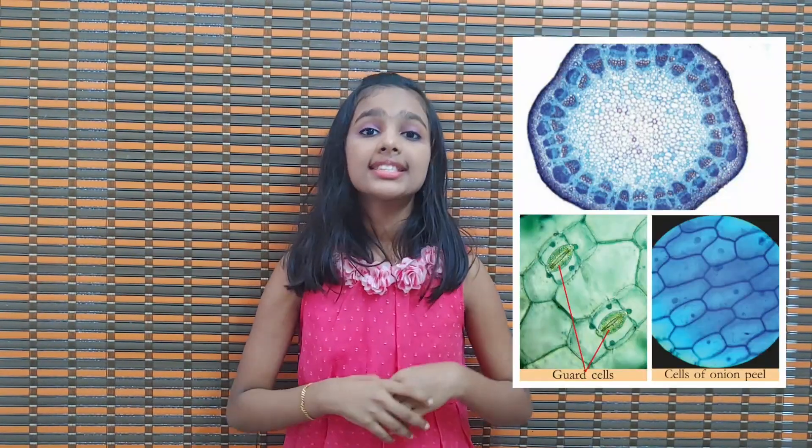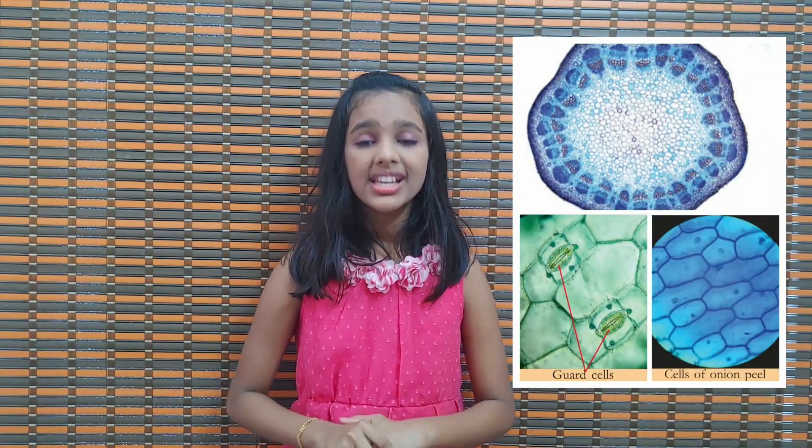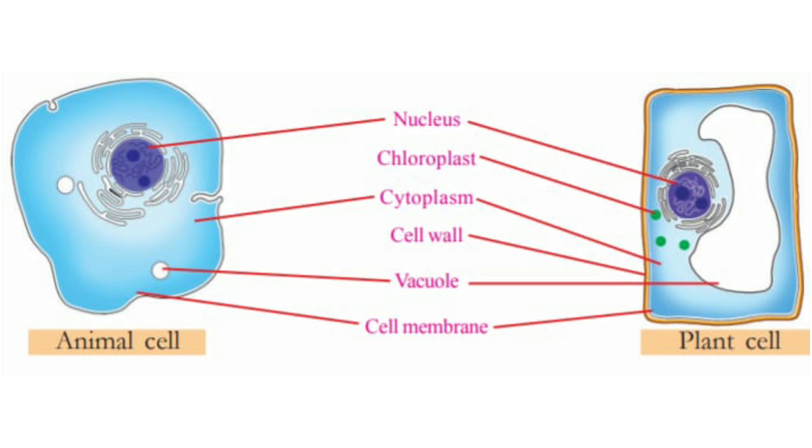Now, what did we understand from this? We understood that the cells are different. When we compare the cells of an onion, the cells of a leaf, and the cells of a stem, we can see that each and every cell is different from each other. Now we have studied the organelles of both animal and plant cells. Let's compare them. There are some common organelles in both: nucleus, cytoplasm, vacuole, and cell membrane are present in both animal and plant cells. But chloroplast and cell wall are only present in plant cells. That is the comparison between animal cell and plant cell.